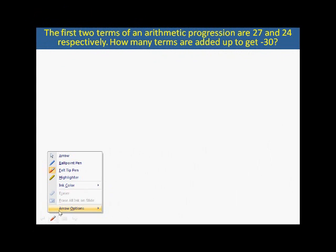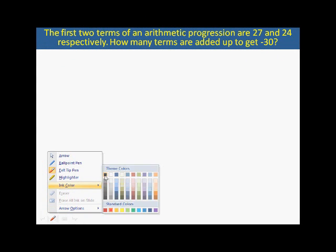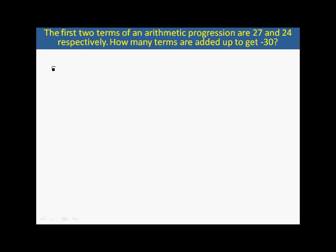We are given here, as you can see, A₁ is 27, A₂ is 24, and we need to find n such that Sₙ equals negative 30.